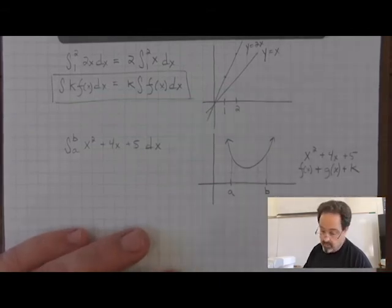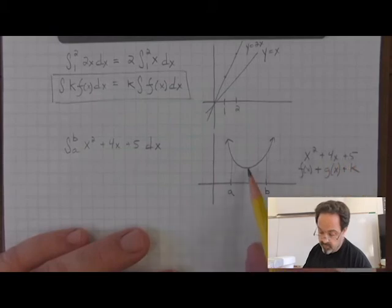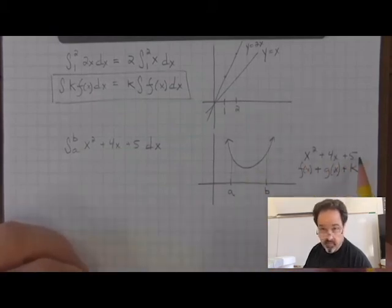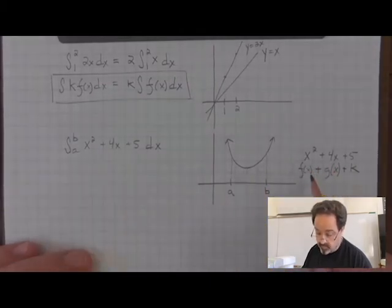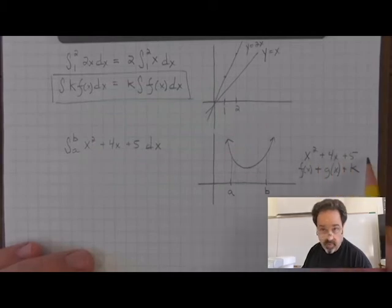Then every value that is found on the graph of this quadratic function can be thought of as the sum of the three components x squared, 4x, and 5, the sum of three distinct functions.